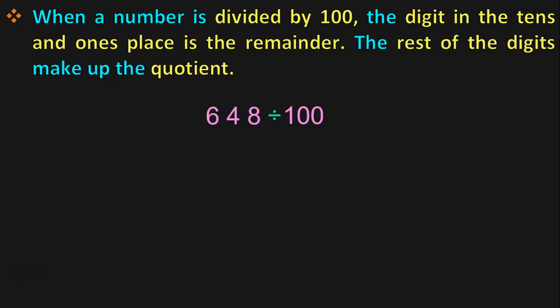Let us do this with the help of an example. We have 648 divided by 100. What does the rule say? When you divide by 100, the digit in the 10's and 1's place is the remainder. So, let us draw a line after the 10's place for easy understanding. Here, 48 is in the 10's and 1's place, so the remainder is 48. The remaining digit makes up the quotient — 6 is the remaining digit. So, the remainder is 48 and the quotient is 6.